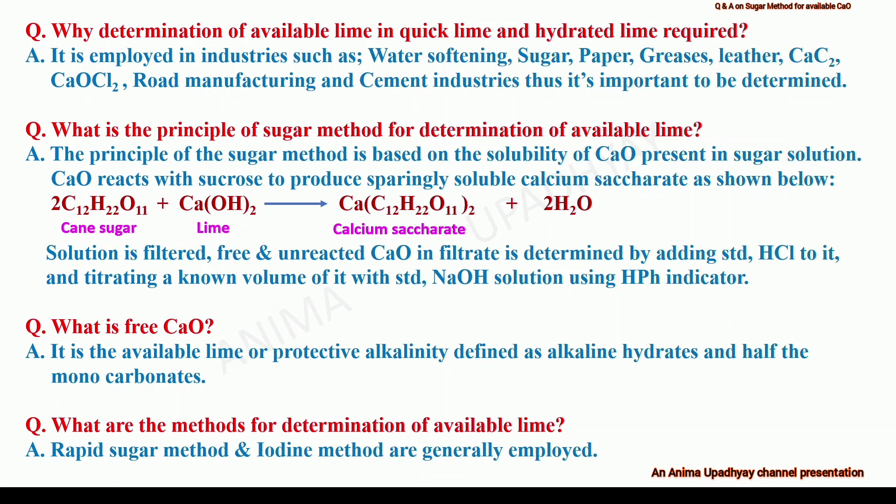What is the principle of the sugar method for determination of available lime? The principle of the sugar method is based on the solubility of calcium oxide present in the sugar solution. The calcium oxide reacts with sucrose or cane sugar to produce sparingly soluble calcium saccharate, as shown by the reaction. The solution is then filtered and the free and unreacted calcium oxide present in the filtrate is determined by adding standard hydrochloric acid solution to it and then titrating a known volume with standard sodium hydroxide solution using phenolphthalein indicator.